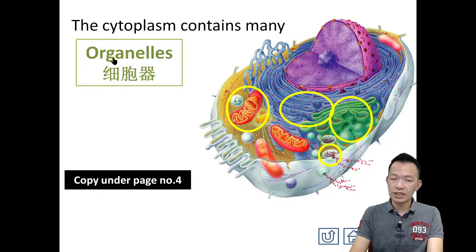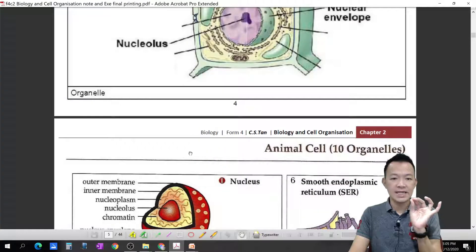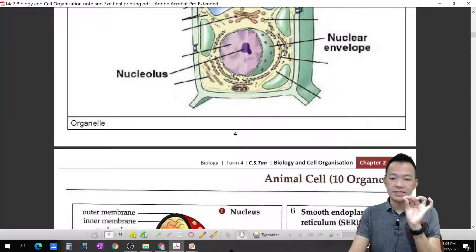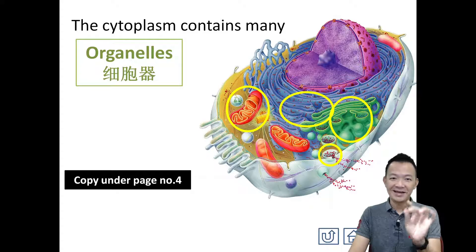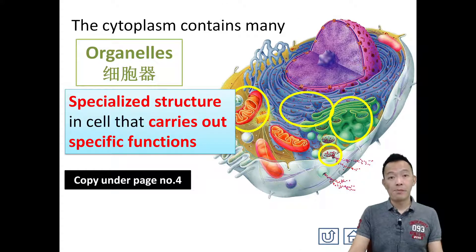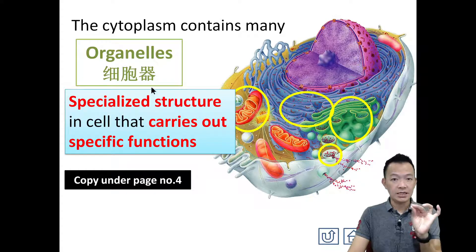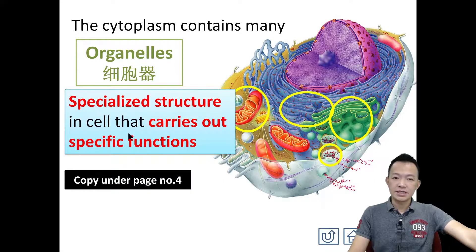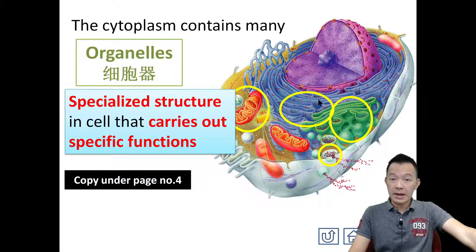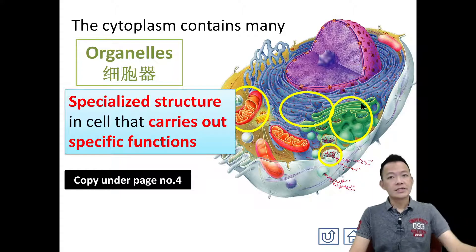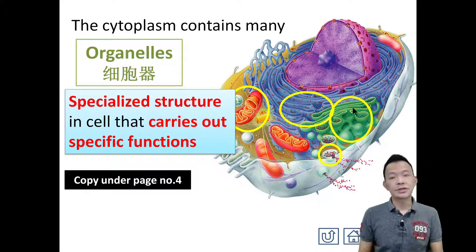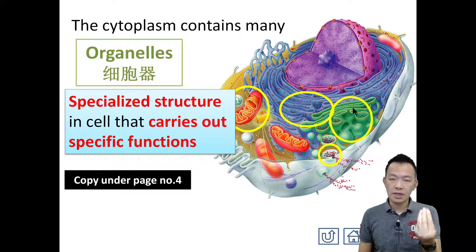So what is meant by cell organelle? Copy under your notes page number 4. What is meant by organelle? In Chinese we call 细胞器. They are the specialized structures in the cell that carry out specific functions. 细胞里面的一些器具，它们会帮忙我们的细胞进行某某功能. So this is what we call an organelle.